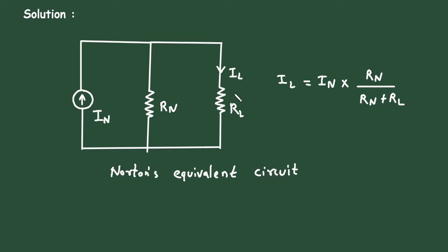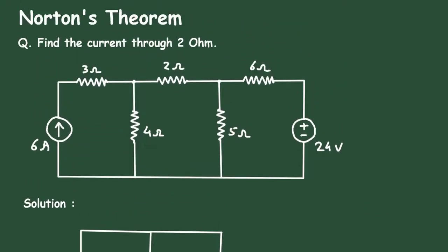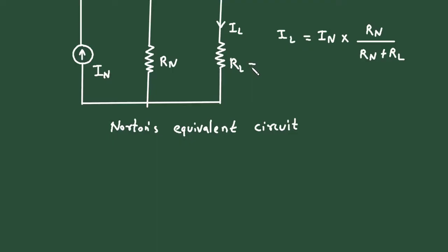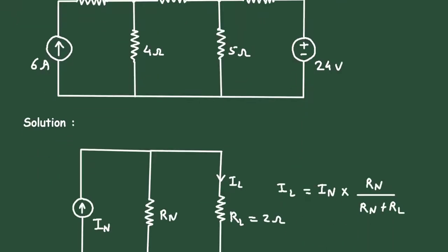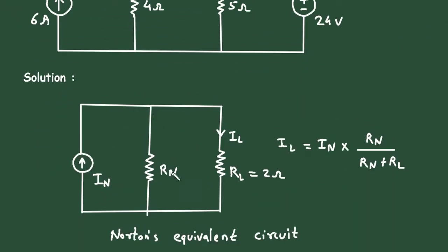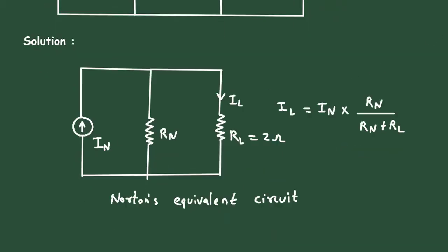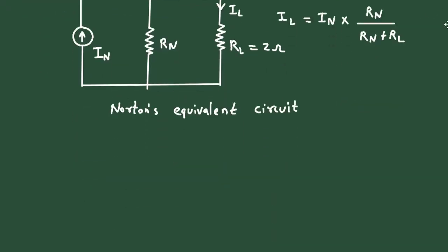Now, first of all, we will see what is the value of Rl. Here we can see we have to find the current through 2 Ohm, which means this 2 Ohm will be Rl. Then we have to find Rn, that is Norton's resistance, and then we have to find In, that is Norton's equivalent current. So first of all, let us find the value of Rn.